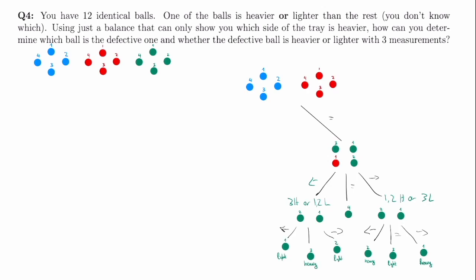Now let's tackle the left branch — where the first weighing showed the scale tipping left, meaning the blue balls are heavier than the red balls. We're going to need a lot of space for this one. For the second measurement, we're going to weigh one red ball and two blue balls on the left side against one red ball, one blue ball, and one green ball on the right side.